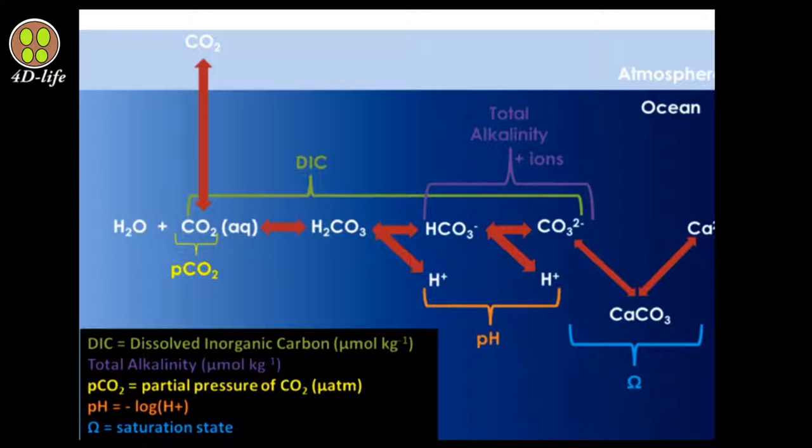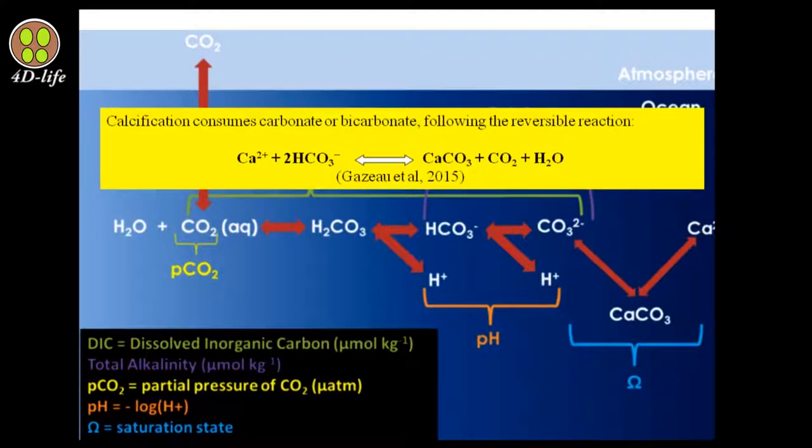In fact, any change in alkalinity and seawater pH has to be compensated with calcium carbonate, which calcareous animals provided for the marine ecosystem. Finally, if everything goes well without having acidification problems, calcification is done by following this reversible reaction. Calcification consumes carbonate or bicarbonate. In fact, calcification with consuming two moles of bicarbonate produces one mole of calcium carbonate.